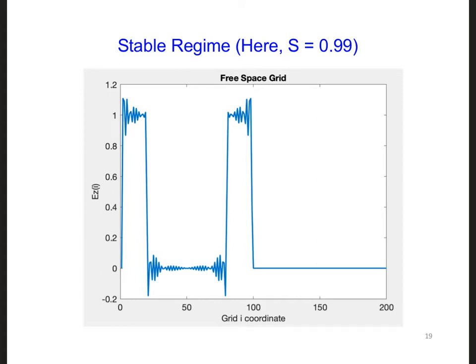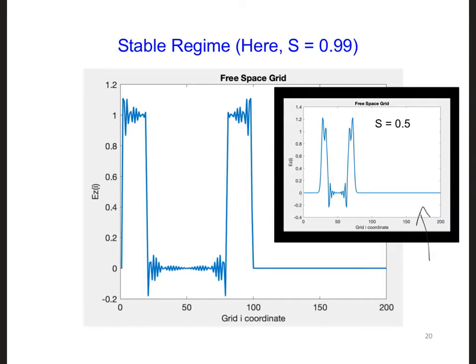This is what I got for s equal to 0.99. You might notice that this result looks better than what we got earlier when we had s equal to 0.5. Here's the result we got earlier. Now that s is equal to 0.99, the propagating wave looks a bit more like a square pulse. But it still doesn't match what we expect physically, which is a wave that looks like a square pulse with an amplitude of 1 propagating away from the source.